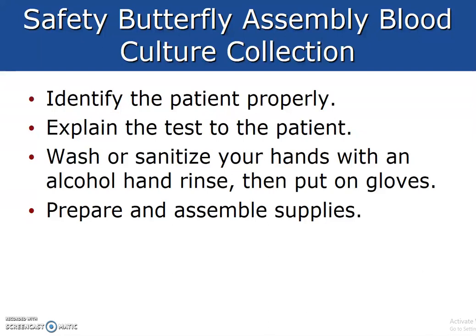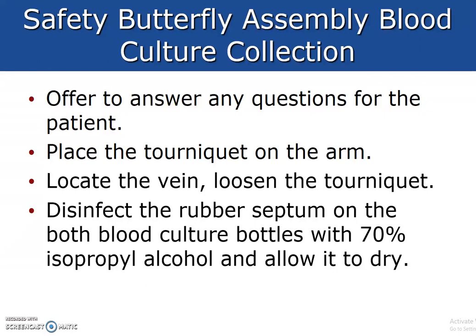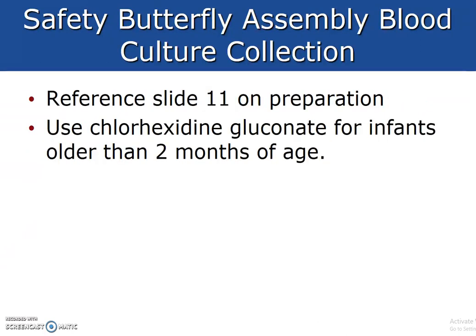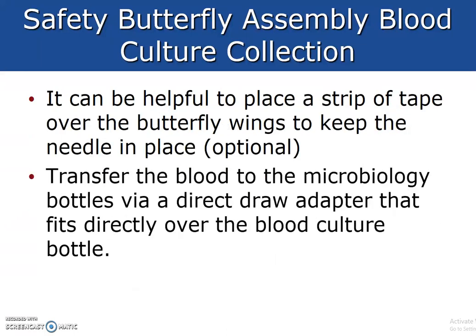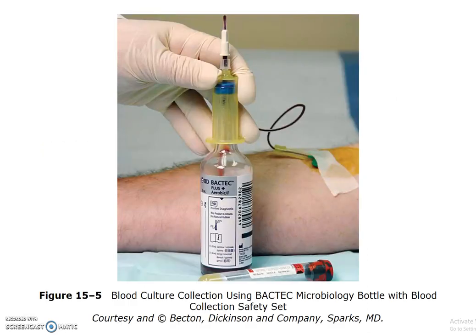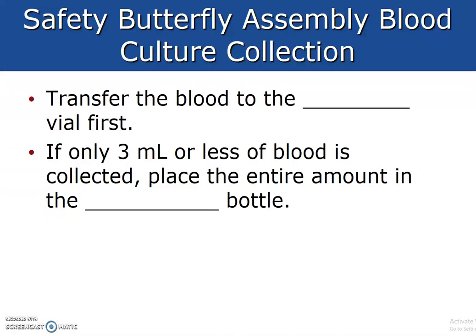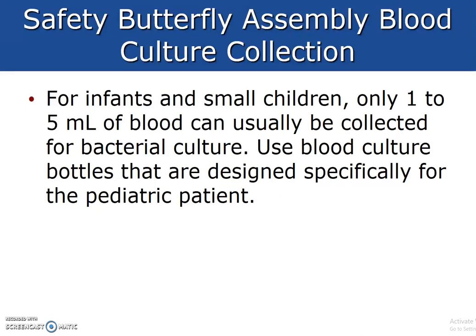This covers the procedure using a safety butterfly for blood cultures. Transfer the blood to the microbiology bottles via a direct draw adapter, and be aware this needs to be hand-delivered to the lab. You can choose to put tape on the arm, though I advise against it — if you need to redirect the needle at all it could cause complications. Transfer the blood to the anaerobic vial first. If only 3 mls or less of blood is collected, place the entire amount in the aerobic bottle. For infants and children, 1 to 5 mls of blood can usually be collected; some facilities say 1 to 3 mls, and for children we go based on weight.